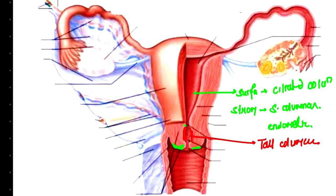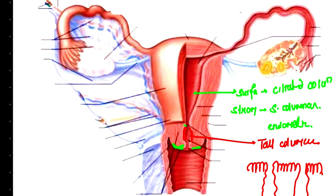There is a special feature of this tall columnar epithelium in the endocervix. These tall columnar cells form compound clefts as they progress. The importance of compound clefts is that they help in the secretion of mucus.